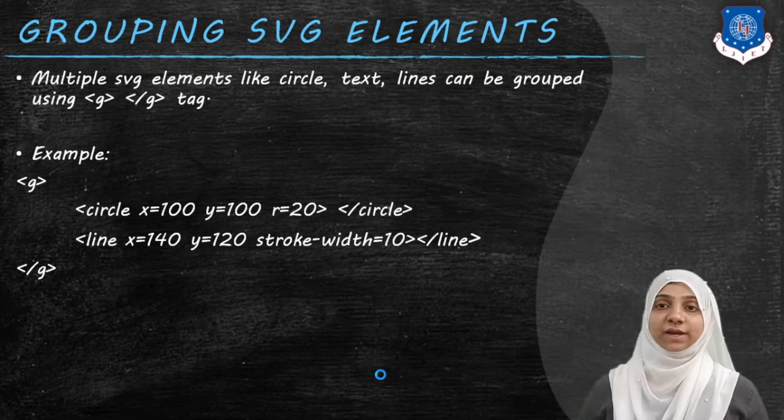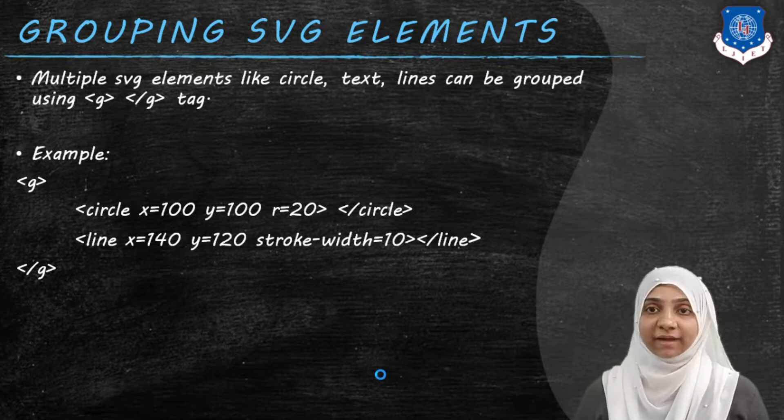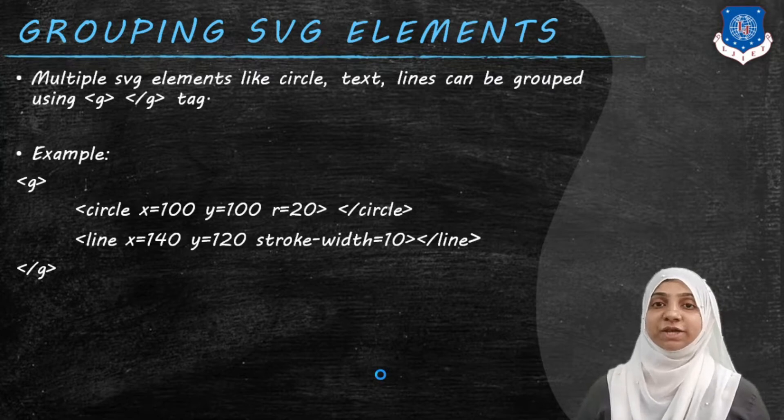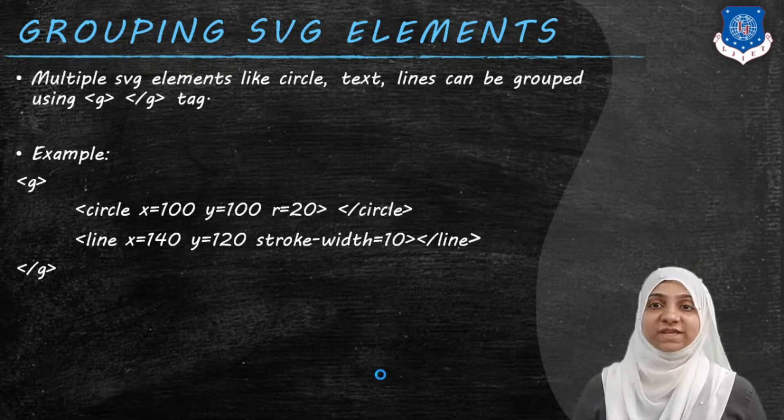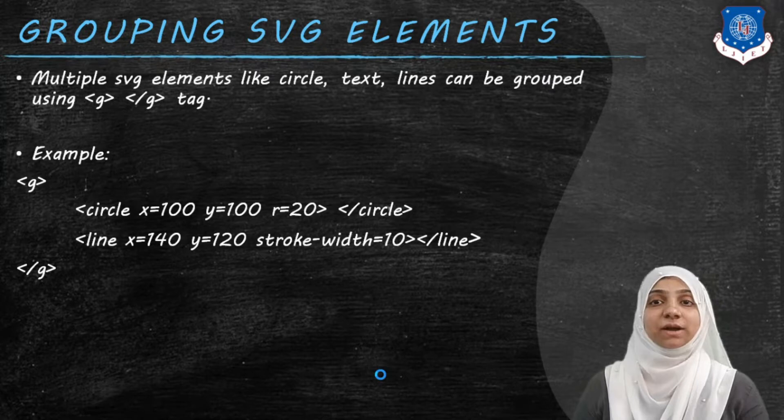Now, what is an advantage of using G tag? Whenever you try to reposition your shape, if you are wishing to reposition more than one shape at some different place, it is advisable that you group those elements or those shapes using G element and transmitting this G element completely.